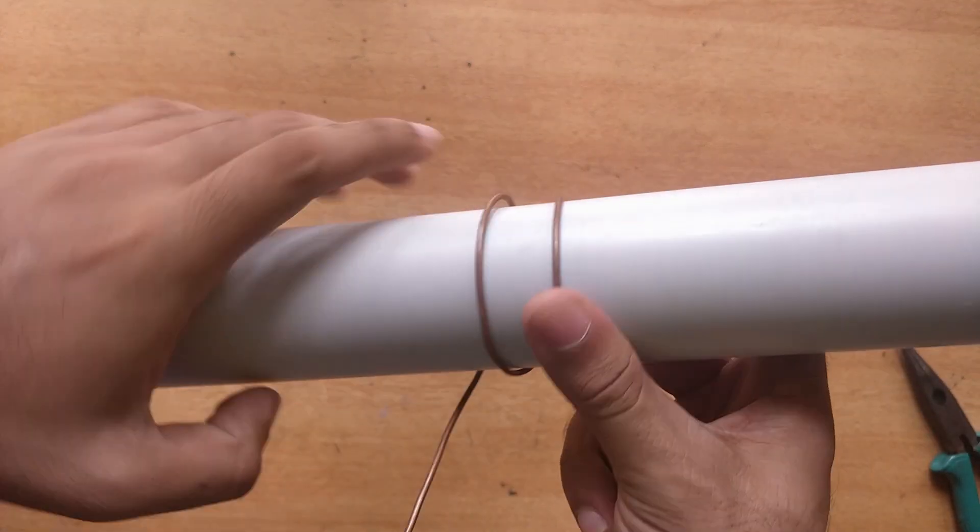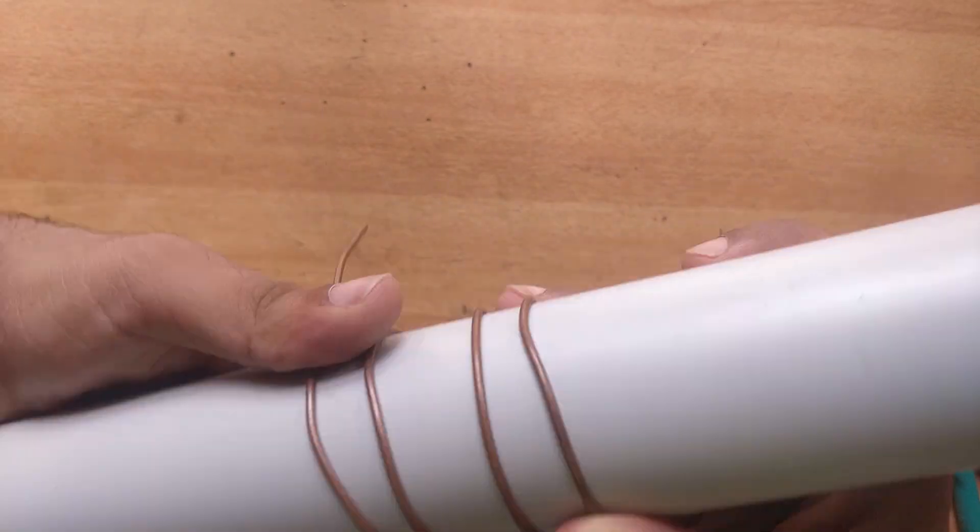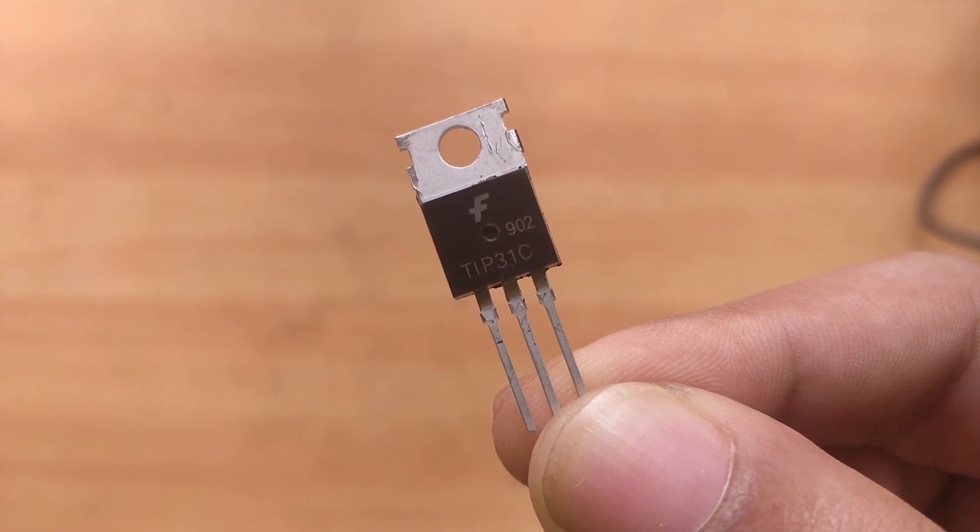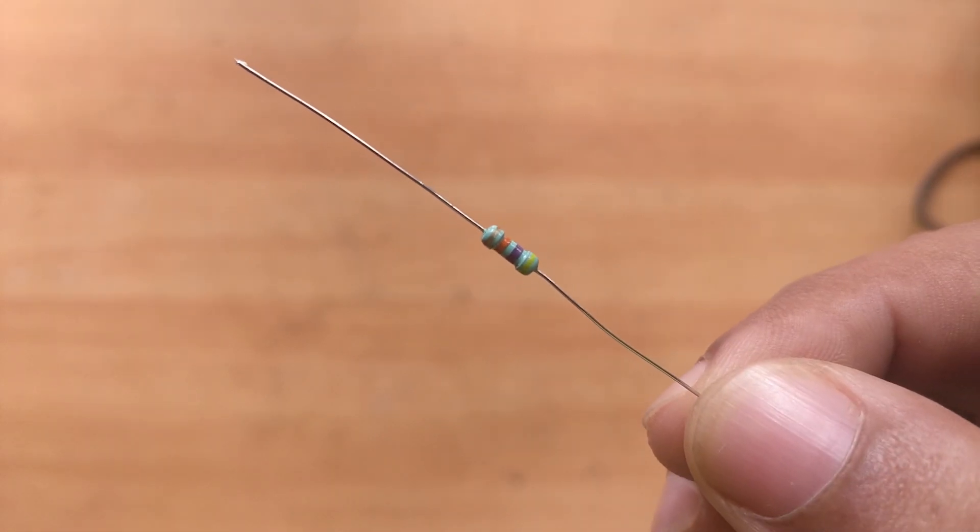Now let us make the primary by winding a 14 gauge wire over a 2 inch PVC pipe and we need around 4 turns in the primary. Now for building the circuit we will be using a TIP31C NPN transistor and a 47 kilo ohm resistor.